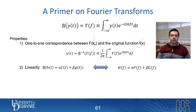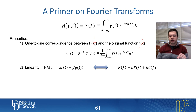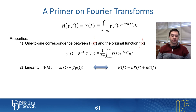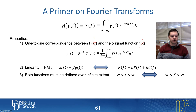It turns out that Fourier transforms, because they're based on integrals, are linear. So if I take the Fourier transform of two things added together, the result is just the Fourier transforms of the two things added together — it has a linear property. As a side note, both functions are defined over infinite extent, so Fourier transforms are only defined when you can take the integral from negative infinity to infinity.